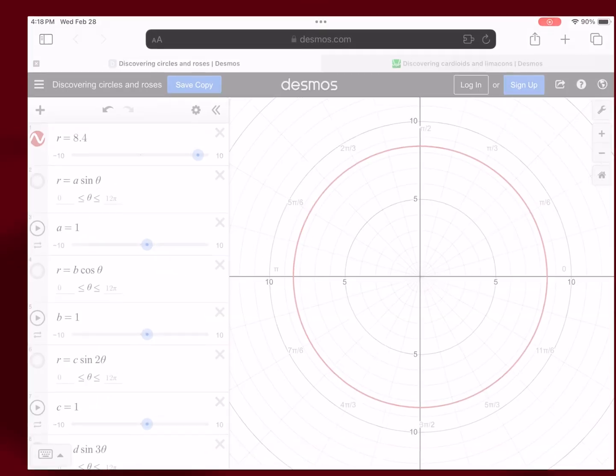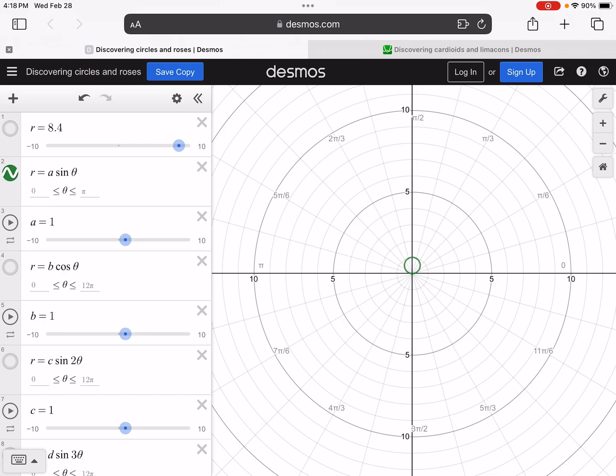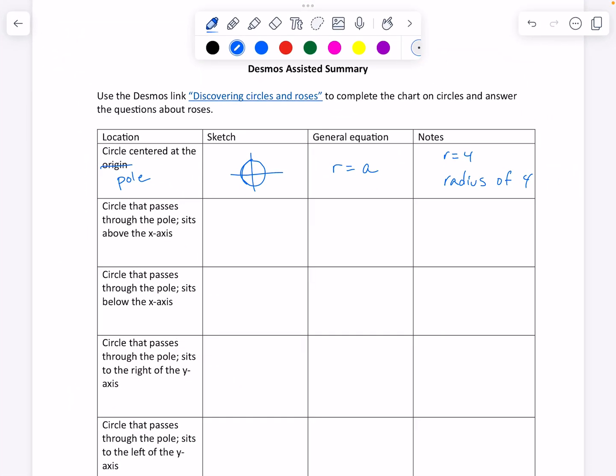And the general equation is r is equal to some value a. Okay, and then the radius... So basically, it's just a circle centered at the pole where the radius... So like if I have... if I say like r equals 4 has a radius of 4. Okay, the circle that passes through the pole sits above the x-axis. Okay, let's come back to Desmos for a second.